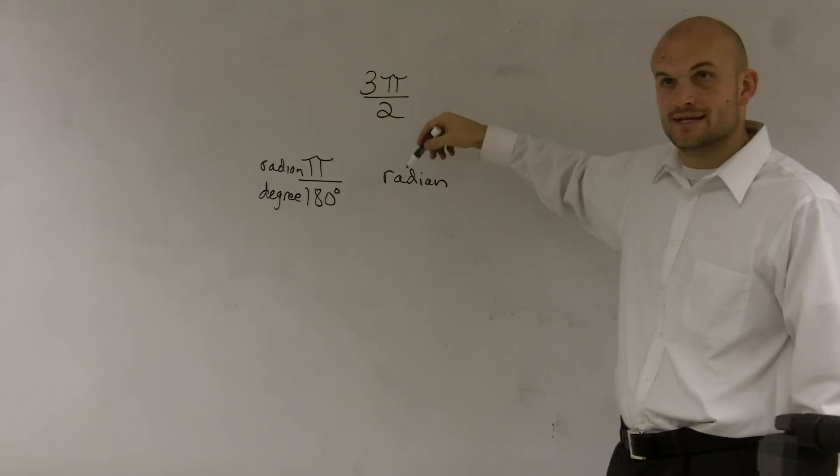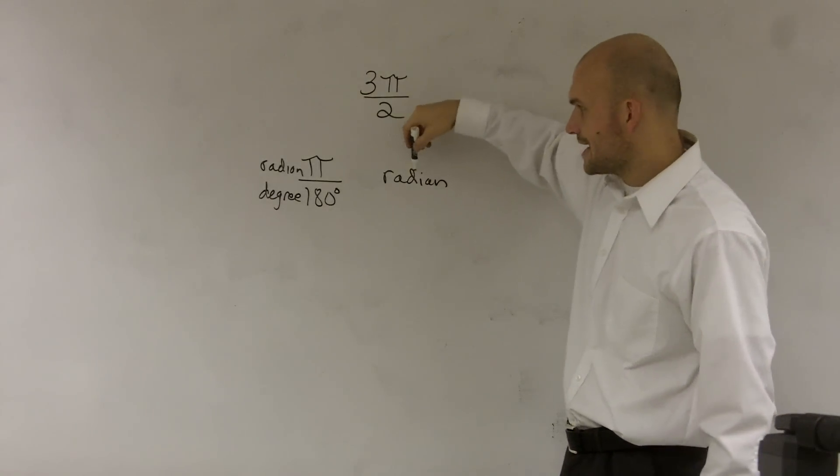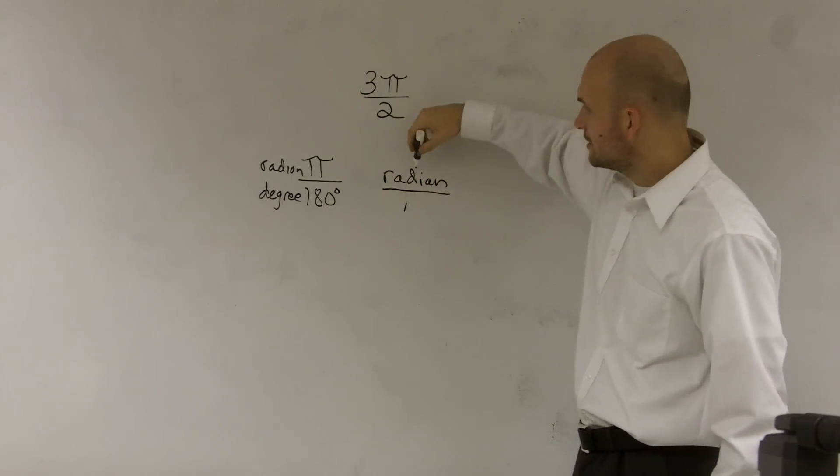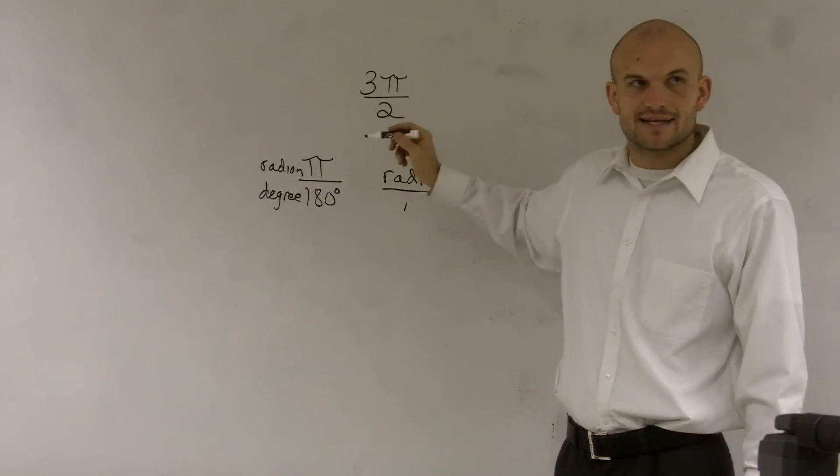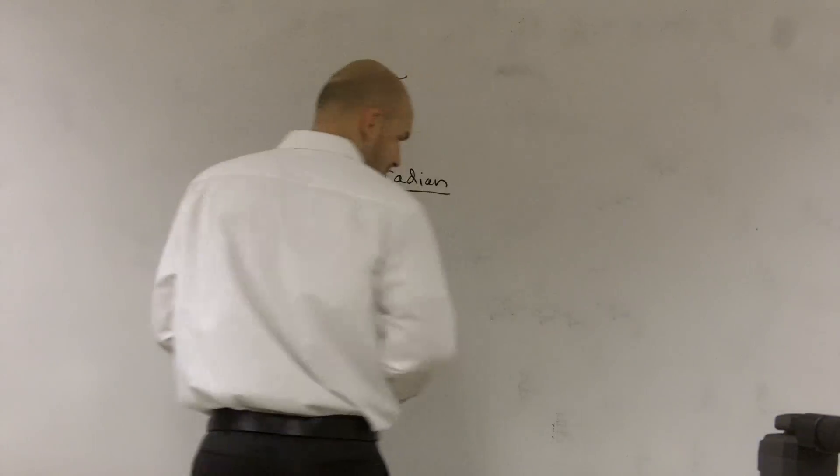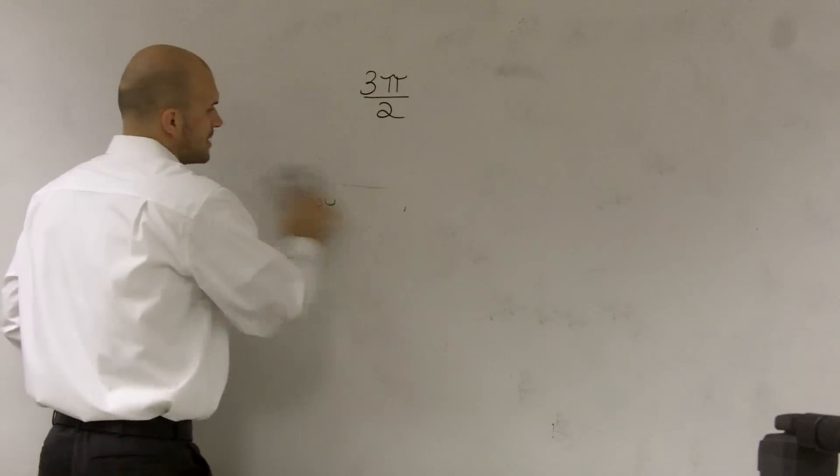Well here, I need to cancel out my radians. So here, I'm not going to have, if I had like a radian over 1, radian over degree, that's not going to cancel out, right? So here's what I'm kind of looking at.